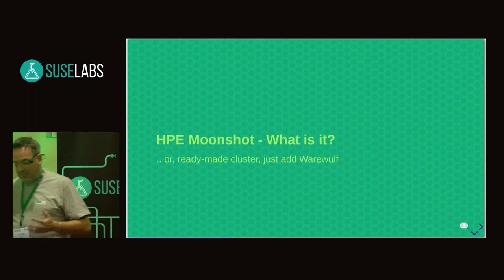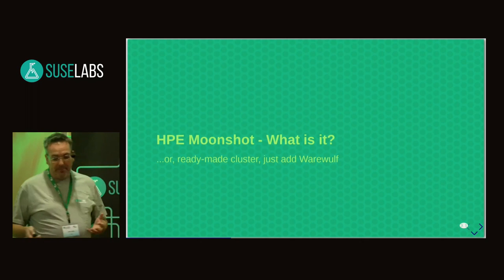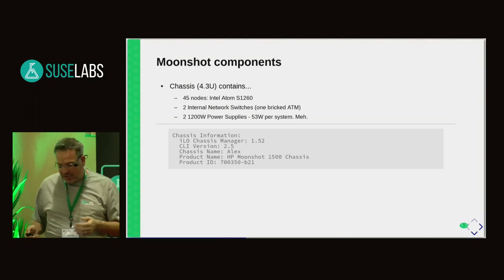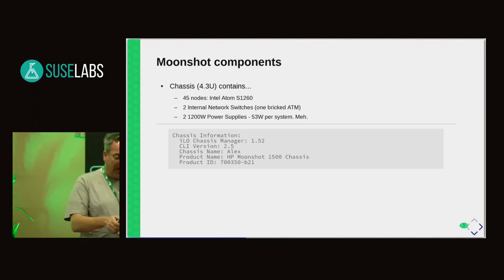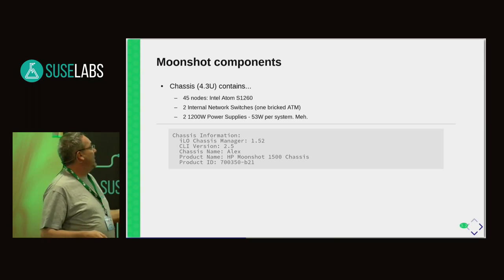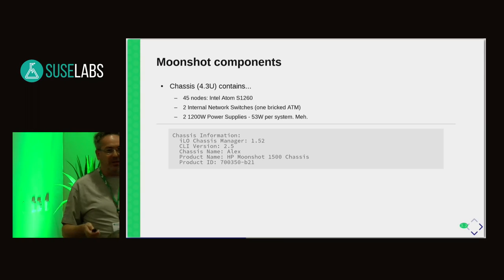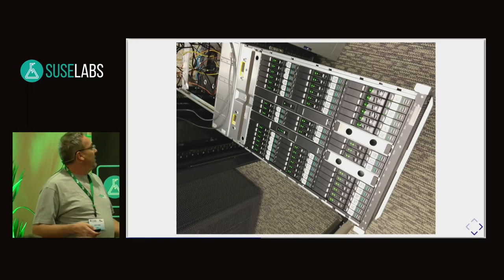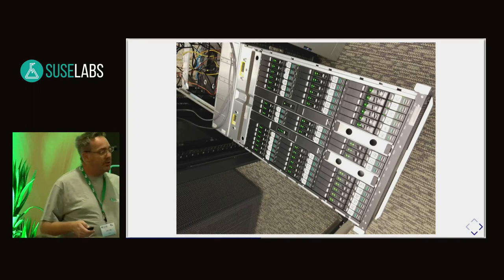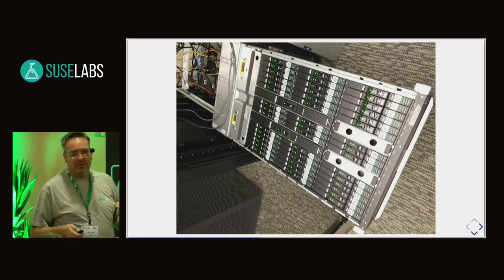Now let's talk a little about Moonshot. The Moonshot system is a very interesting rack-based system, tightly packed with 45 individual systems all within a 4.3U rack-mount chassis, along with two switches, power supply, and everything else. We have one in Provo and one in Nuremberg. The Provo unit is Intel-based and the Nuremberg unit is ARM-based, but they share the same basic configuration.